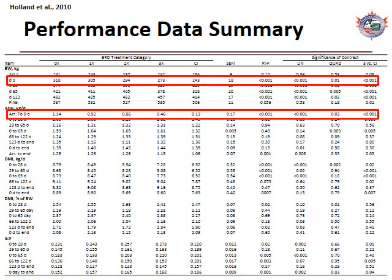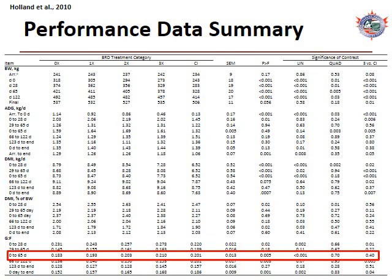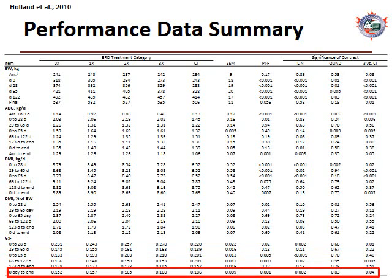Performance data indicated that calves requiring an increased number of BRD treatments had a decreased average daily gain during the preconditioning period and a lower body weight at the end of that period. What is really interesting is what happened in the finishing period. The gain-to-feed ratio in the first 65 days of finishing — the inverse of a feed-to-gain ratio, indicating kilograms of gain per kilogram of dry matter — showed a linear increase in feed efficiency with increasing BRD treatments. This linear increase in feed efficiency with increasing BRD treatments was also observed across the entire finishing period.